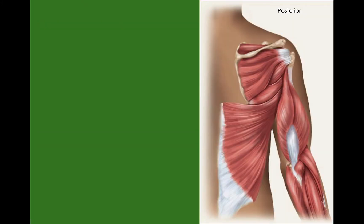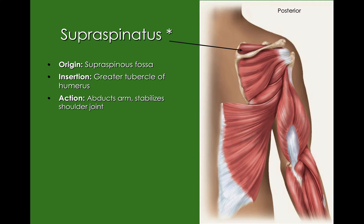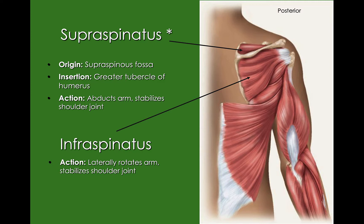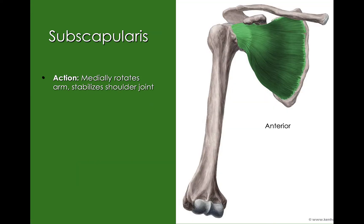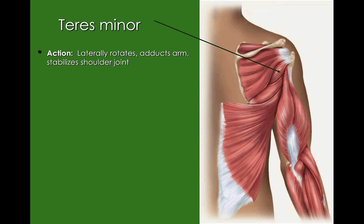Let's look a little bit closer at some of these muscles. First is our supraspinatus. Our origin is that supraspinous fossa. The insertion is the greater tubercle of the humerus, and this is going to help abduct the arm and stabilize our shoulder joint. Our infraspinatus is going to laterally rotate our arm and stabilize our shoulder joint. Teres minor is going to laterally rotate, adduct the arm, and help stabilize the shoulder joint.